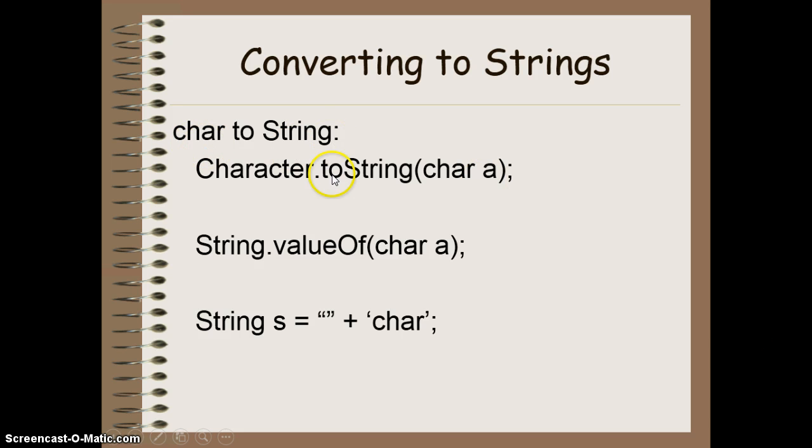Chars also have additional methods. So in addition to using the toString method or the value of method, I can also use toString and I can also say string s equals and put double quotes in here and add an individual character. That will convert it automatically to a string and concatenate it onto the end of my empty string here, resulting in just my one character value of a string.